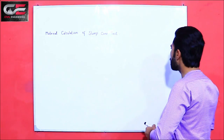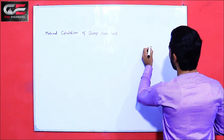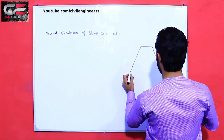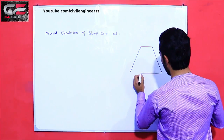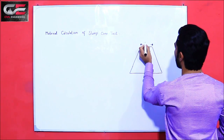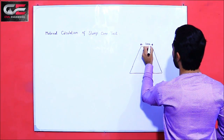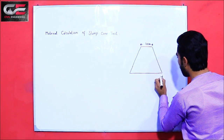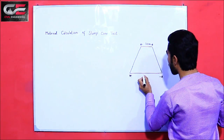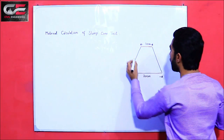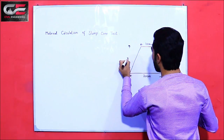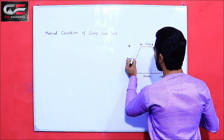Let's start. As you know, you can see this is the slump cone. The diameter of the upper portion of the slump cone is 10 centimeters, and the bottom diameter is 20 centimeters. And the height of the cone is 30 centimeters.